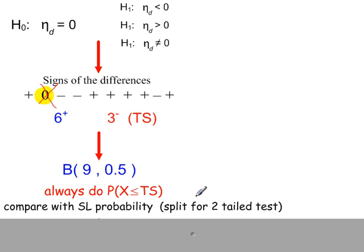For a two-tailed test, you have to split the significance level. So if you had a 10% significance level two-tailed test, you're comparing your probability here that you've looked up from the tables with 0.05. You've split the 10%. Only do that for a two-tailed test.